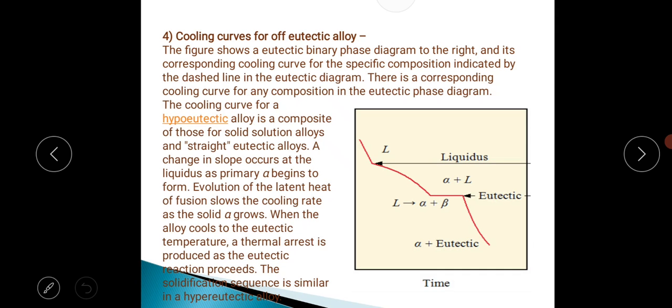Cooling curves for off-eutectic alloy: The figure shows the eutectic binary phase diagram to the right and its corresponding cooling curve for the specific composition indicated by the dashed line in the eutectic diagram. There is a corresponding cooling curve for any composition in the eutectic phase diagram. The cooling curve for a hypoeutectic alloy is a composite of those for solid solution alloys and straight eutectic alloys. A change in slope occurs at the liquidus as primary alpha begins to form. Evolution of latent heat of fusion slows the cooling rate as the solid alpha grows. When the alloy cools to eutectic temperature, a thermal arrest is produced as the eutectic reaction proceeds. The solidification sequence is similar in hypereutectic alloy.